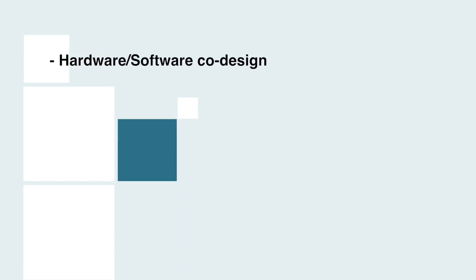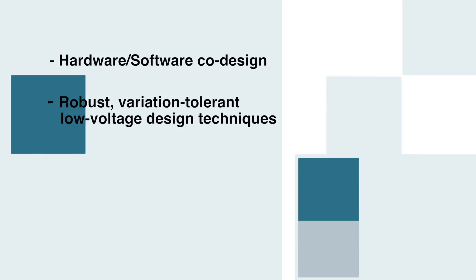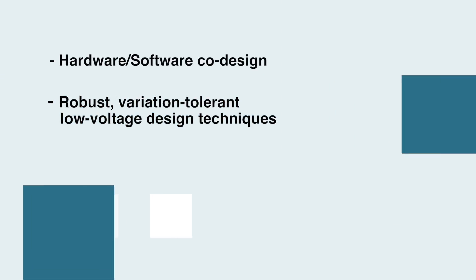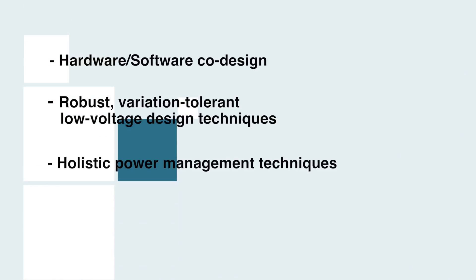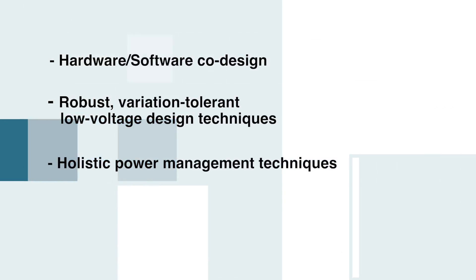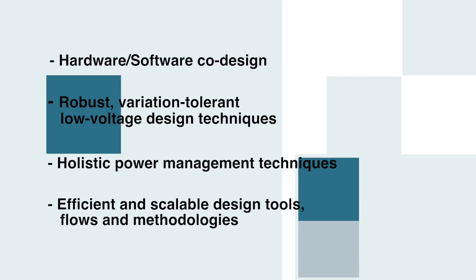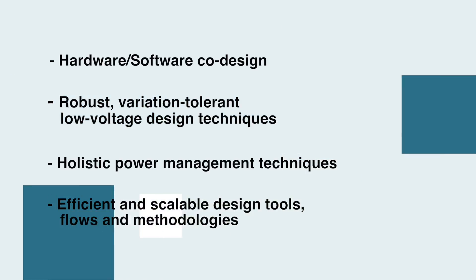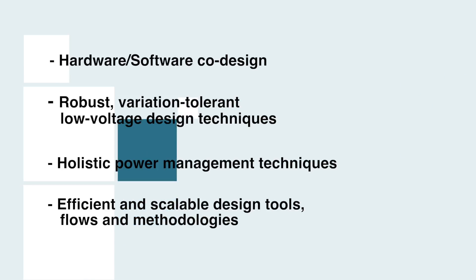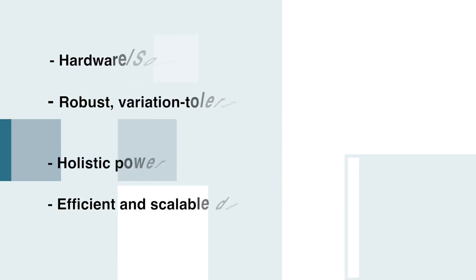Students need to better understand system design aspects including hardware software co-design, learn robust variation tolerant low voltage design techniques in scaled CMOS process, be familiar with holistic power management techniques, and develop skills in efficient and scalable design tools, flows, and methodologies for fast design implementations and efficient porting across process nodes.